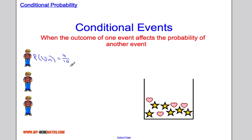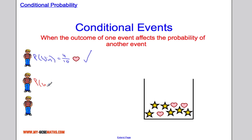That's assuming each object is equally likely to be chosen. Now let's assume player one does win — he chooses a heart and wins a prize. Contestant two steps up, and the probability that contestant two wins has now changed because one of the hearts is gone. The probability that contestant two wins is three hearts left out of nine remaining objects — three out of nine.